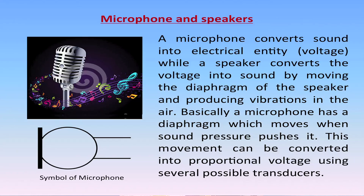Basically, a microphone has a diaphragm which moves when sound pressure pushes it. This movement can be converted into a proportional voltage using several possible transducers. A transducer is a device which receives electrical, mechanical or acoustic waves from one medium and converts them into related waves for a similar or different medium. Microphones can be of several types: electrostatic, piezoelectric, contact resistance and magnetic type.